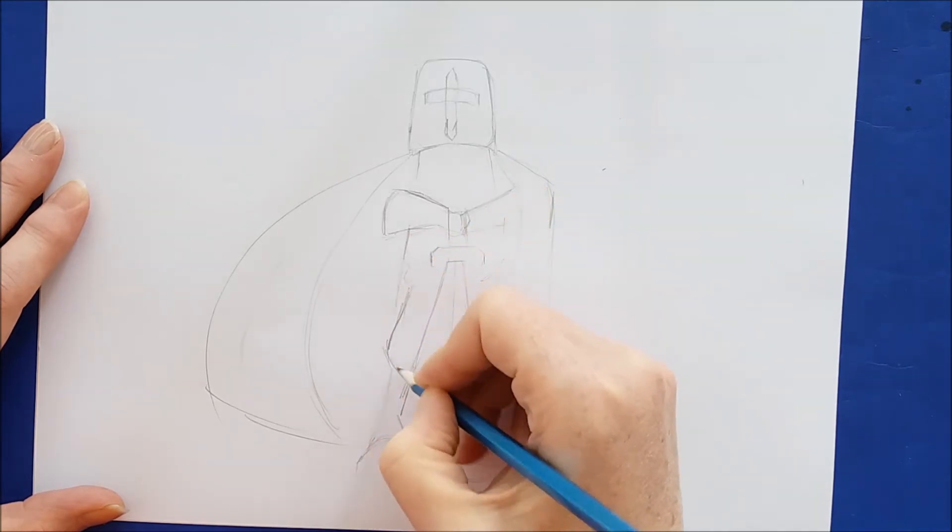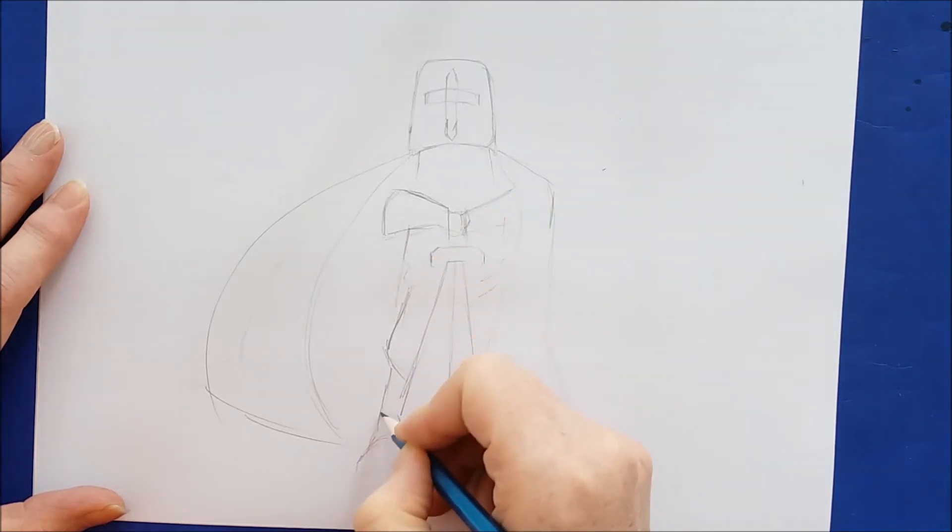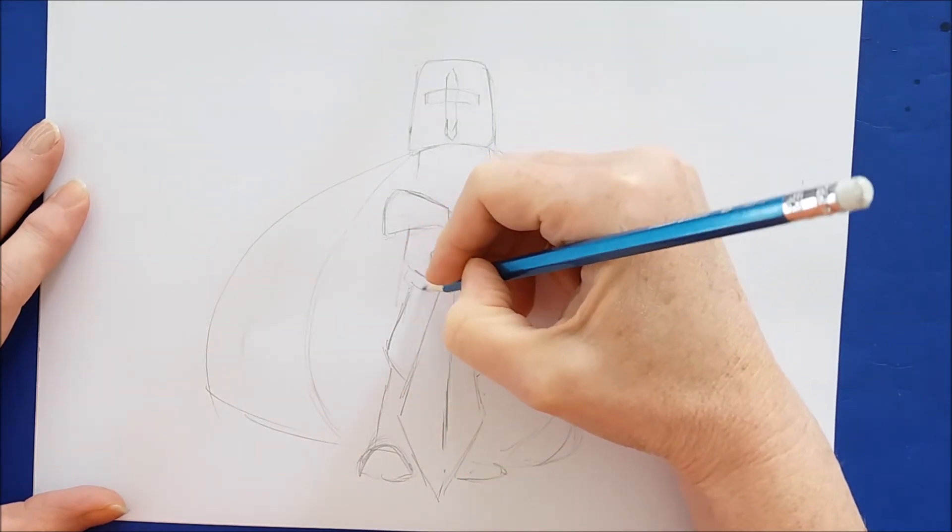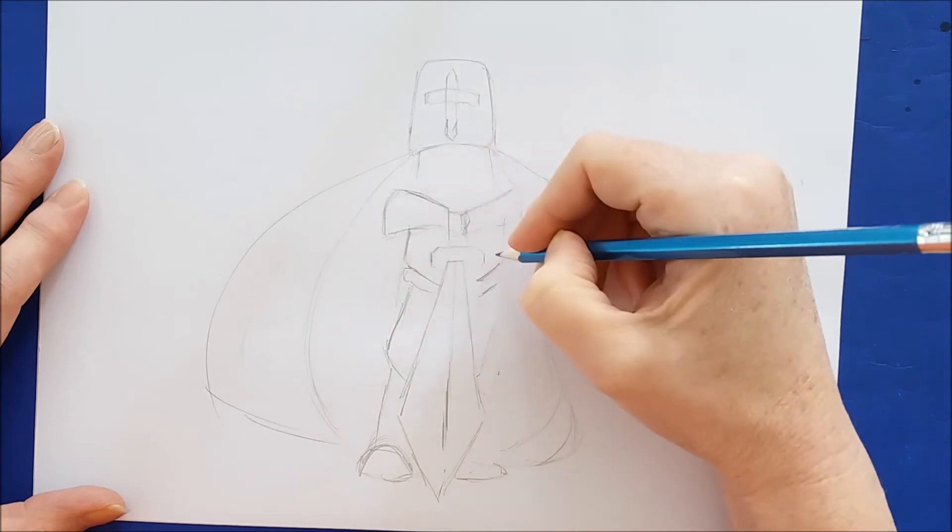Now I'll finish drawing in the gloves and then the tunic, which are just downward lines, and then the boot that he's wearing. It'll be just a letter C upside down.